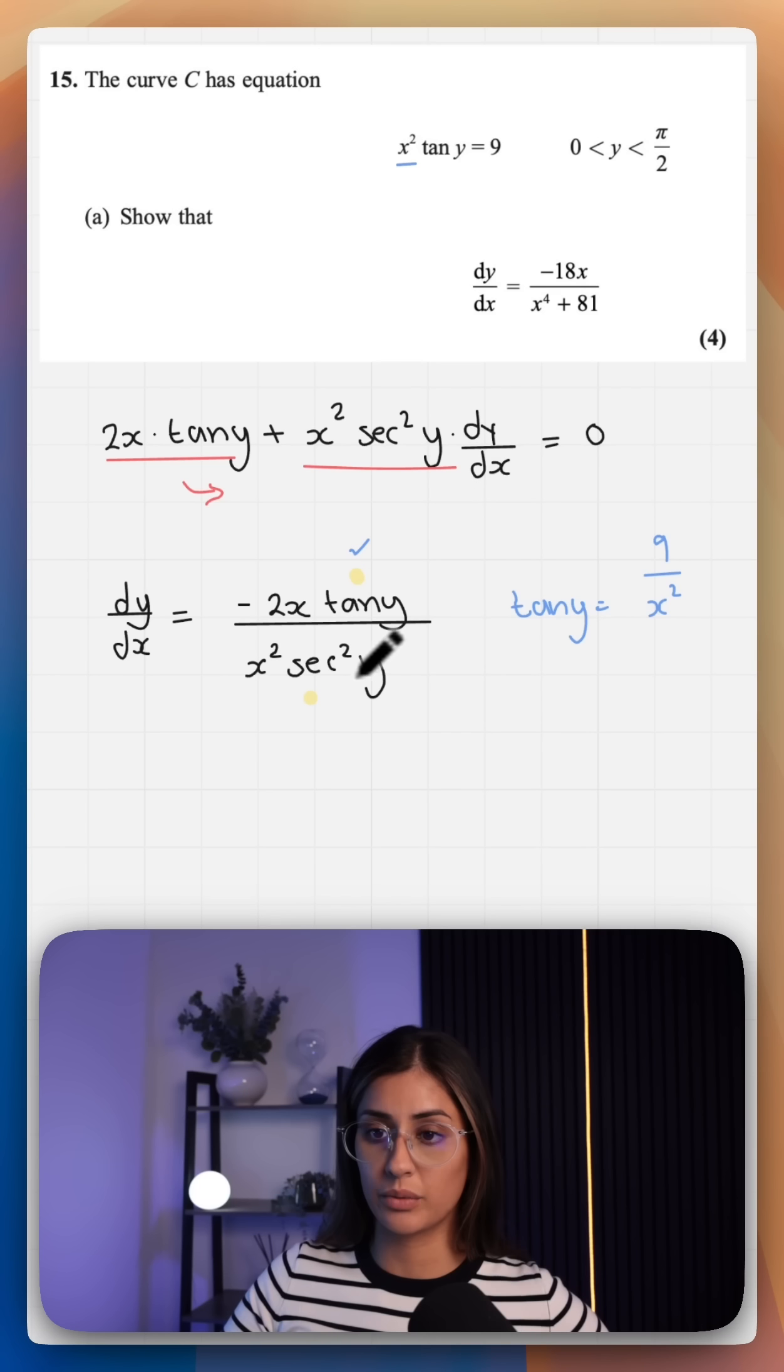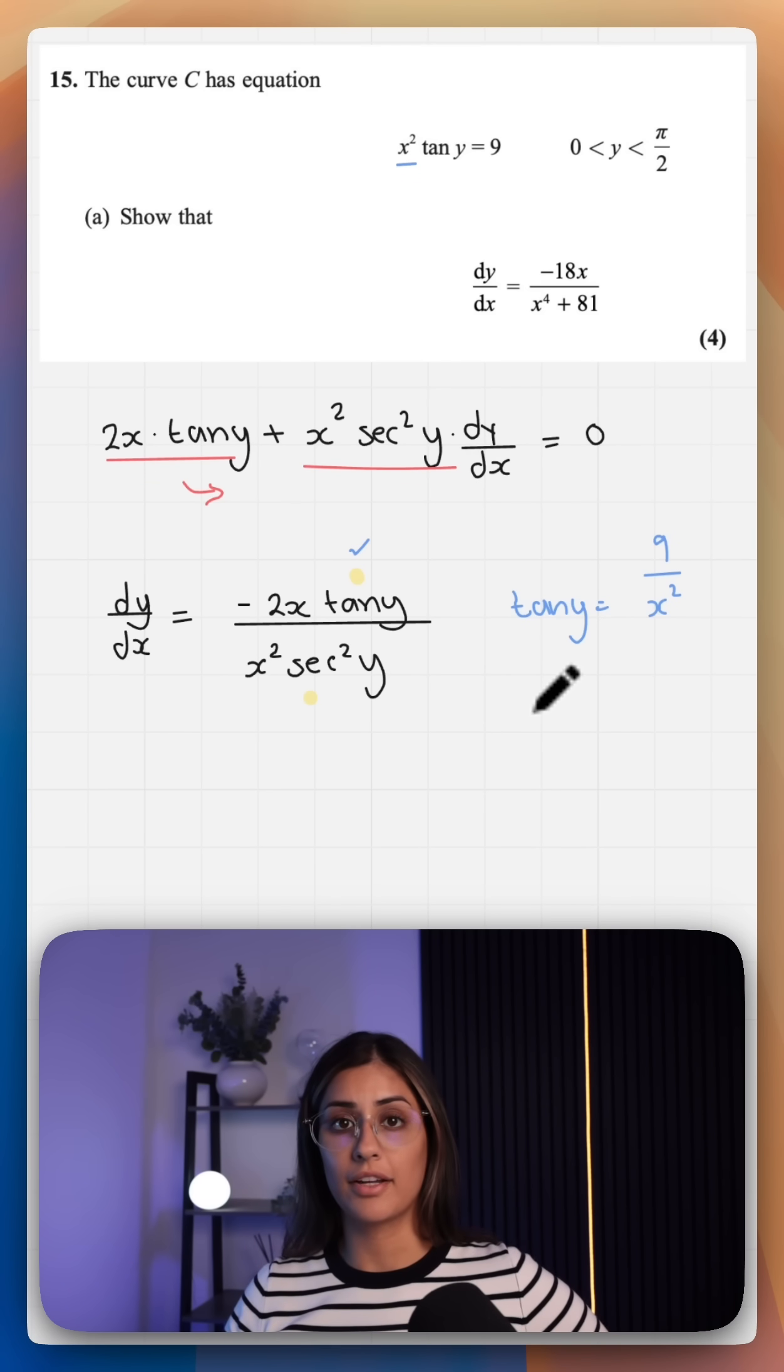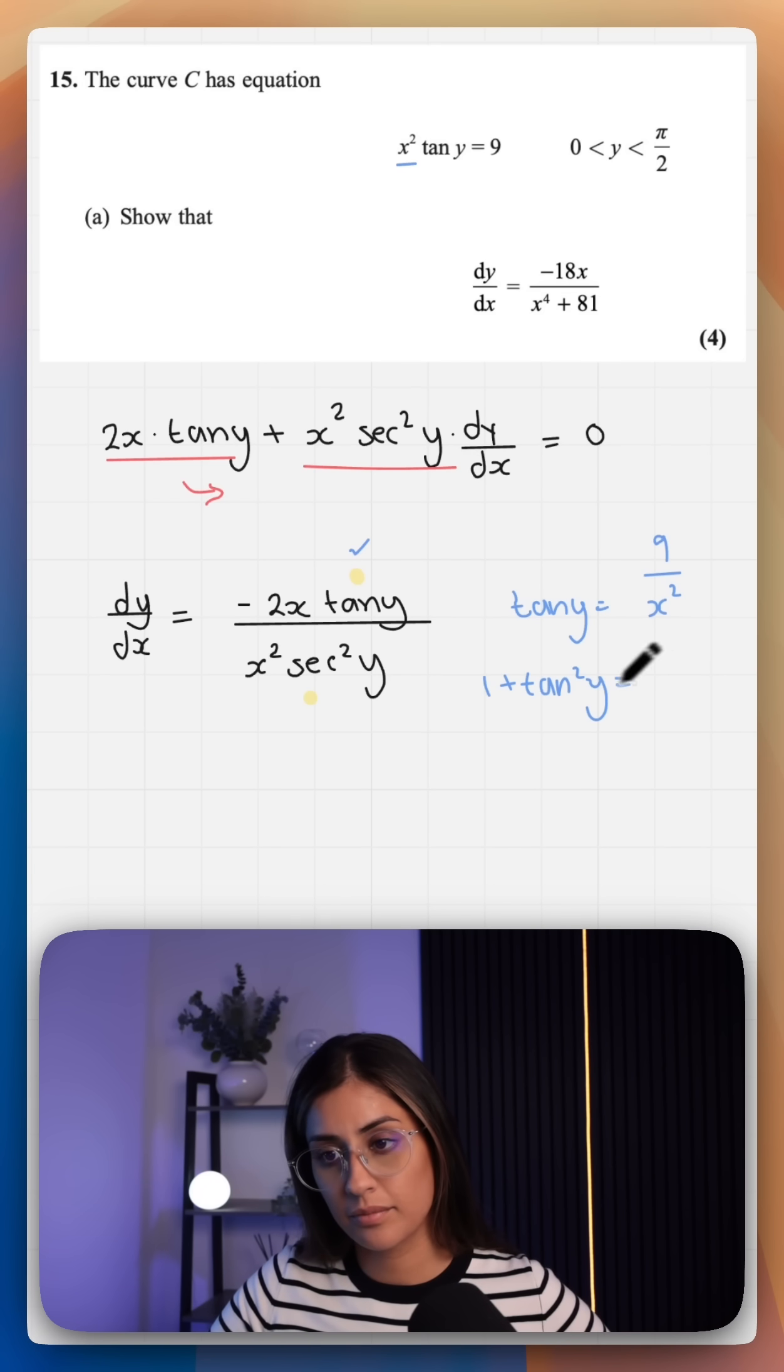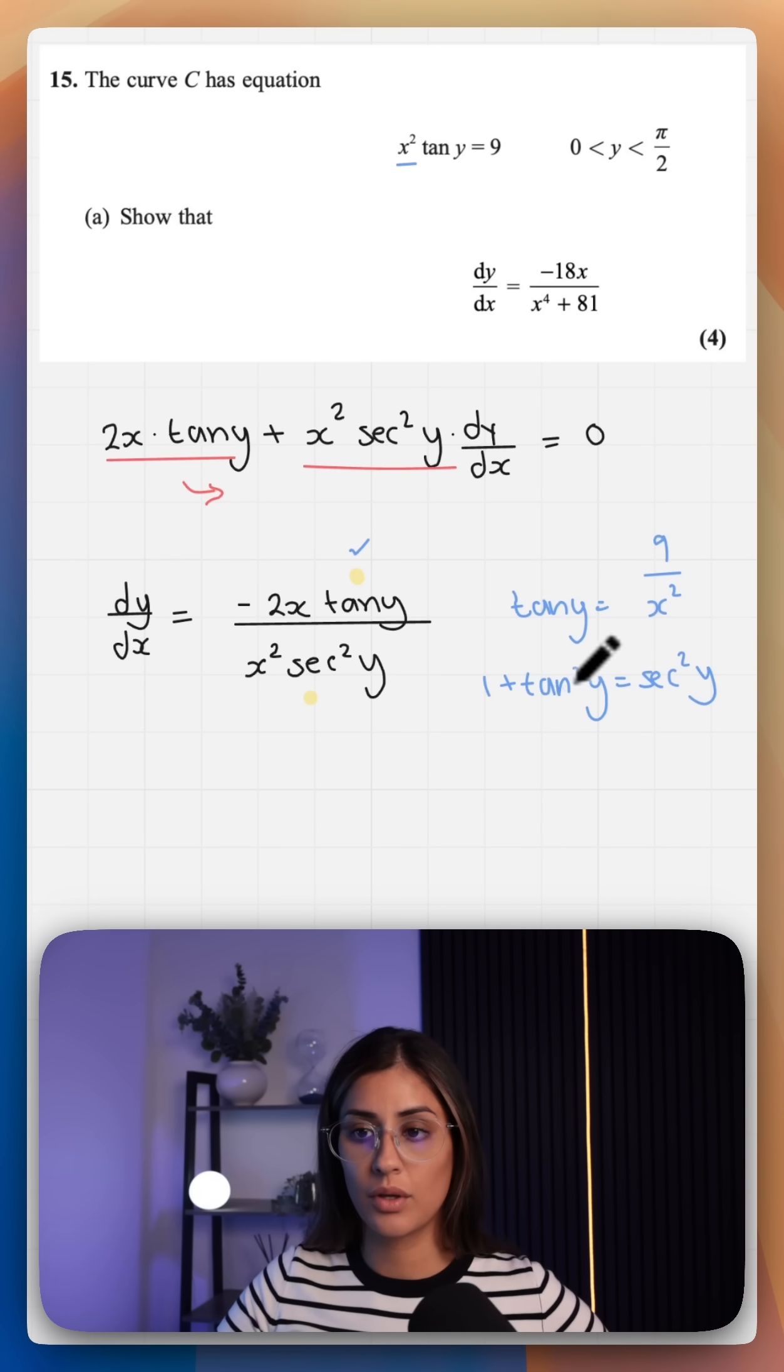But the denominator is sec squared y. We do know a Pythagorean identity that links tan and sec. So we can use this with tan squared y as 9 over x squared squared and sub everything in. Before I do that I am just going to simplify.